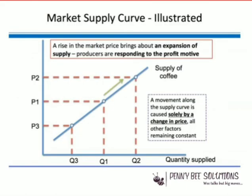Now let's talk about supply. As we discussed, demand is the quantity of a product at a given price over a given period of time. On the other hand, supply is the amount of product that suppliers make available to the market at any given price in a given period of time — the amount of goods that producers are likely to offer at a given price over a period of time.